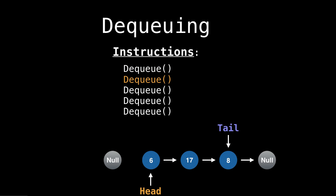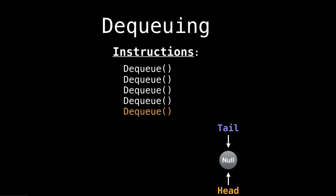So you see, as we keep dequeuing, we're just pushing the head forward and forward again. And at the very end, if we add a bunch of elements and remove them all, then the head and the tail again point to null, which is where we started.